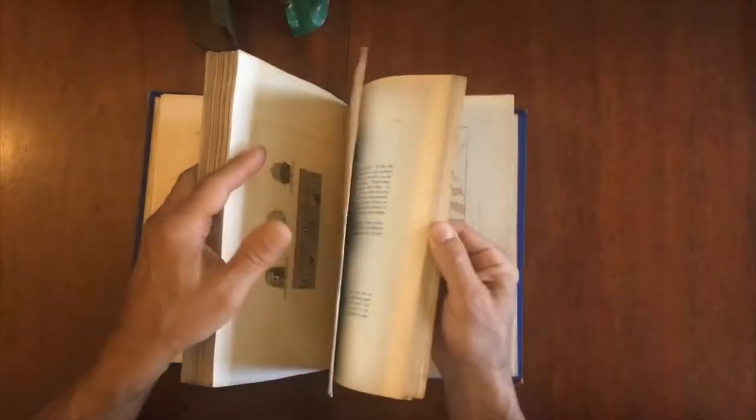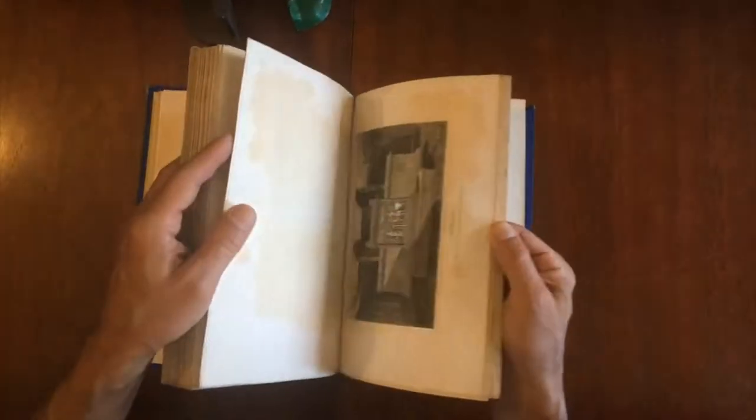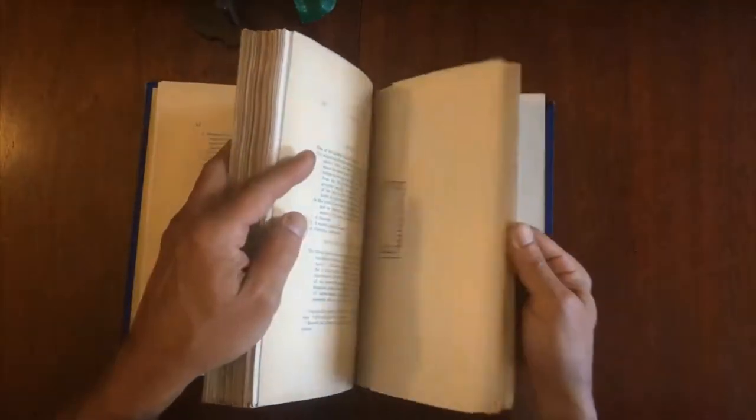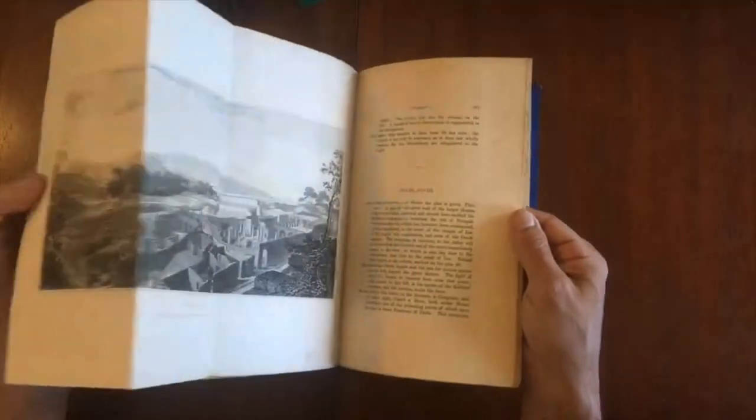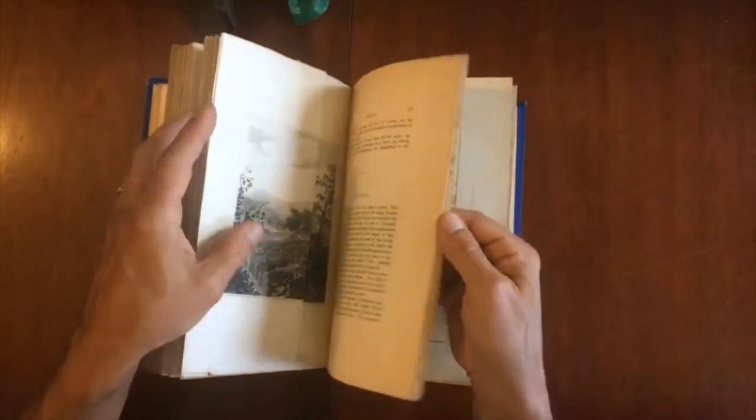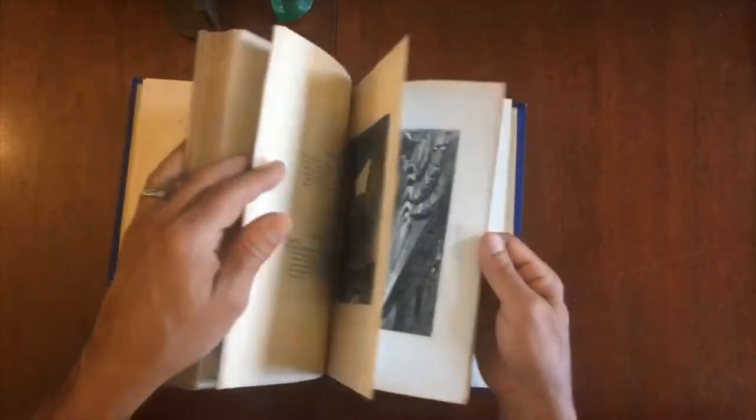And it just goes on and on and on. There are really a lot of them. I think we said 77 of them. It's a profusely illustrated plate book. There's a beautiful panoramic view there that's folding, and there's another panoramic view, and there's just all these great street views and temple views.